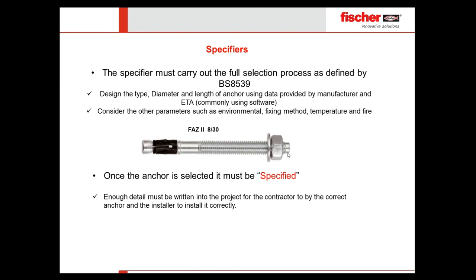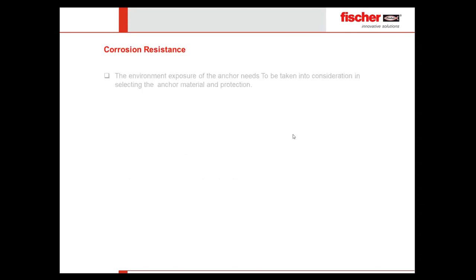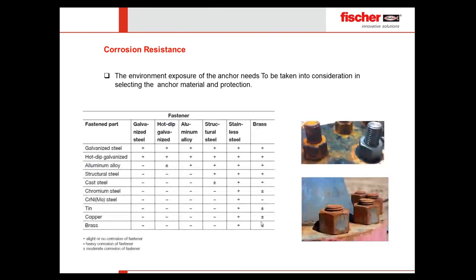That brings us to corrosion. We have a very good seminar already posted on our YouTube channel covering full details about corrosion resistance — I'd recommend referring to that. What I'll show here is a picture of the compatibility of fastenings relative to the fixture being fixed, to avoid bi-metallic corrosion. If you wish to study more about bi-metallic corrosion, please refer to our YouTube channel and watch that online seminar.